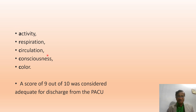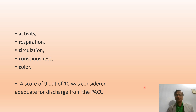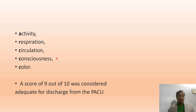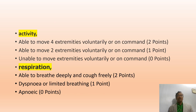The Aldrich score is based on AR-triple-C: Activity, Respiration, Circulation, Consciousness, and Color. A score of 9 out of 10 is considered adequate for discharge from the post-anesthesia care unit. Each parameter is scored 2, 1, or 0, for a maximum of 10.